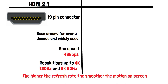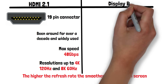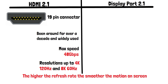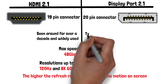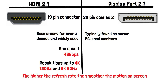Now let's talk about DisplayPort 2.1, which is the latest version. DisplayPort uses a 20-pin connector, like we can see here, and is typically found on newer PCs and monitors. DisplayPort is a newer standard that was developed to replace VGA and DVI as the primary connection for computer monitors. Like HDMI, it can transmit both audio and video, but it also has some additional features that make it particularly well-suited for use in computer displays.